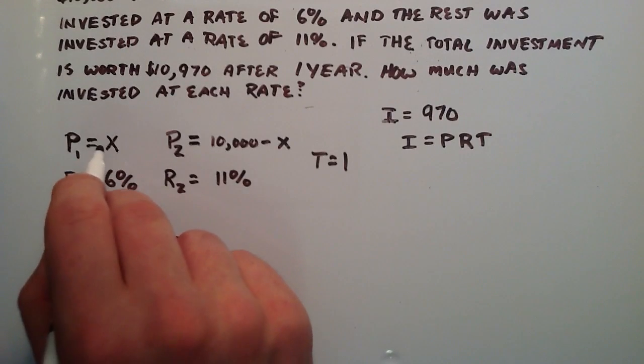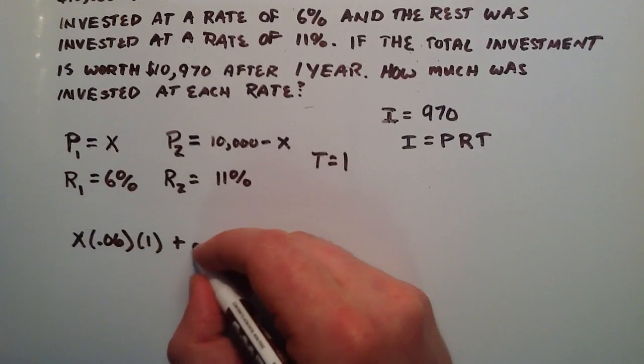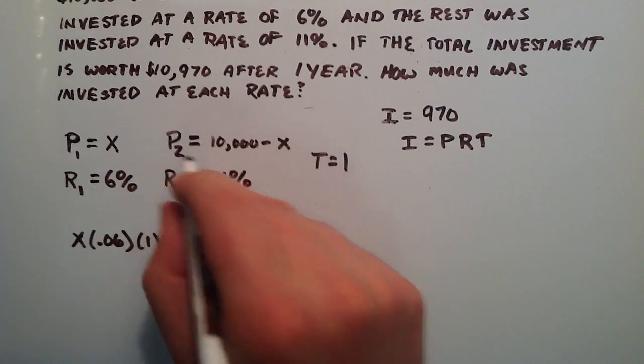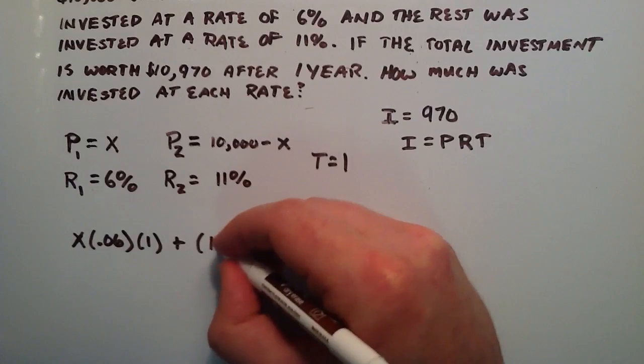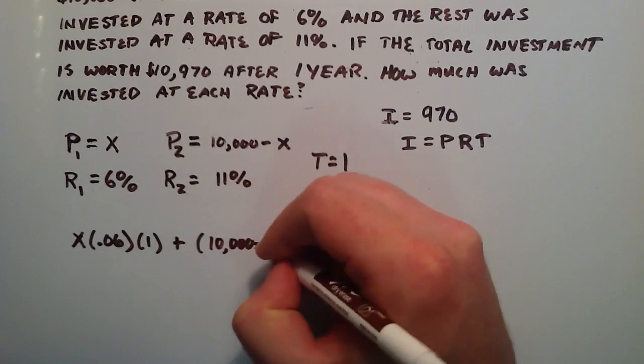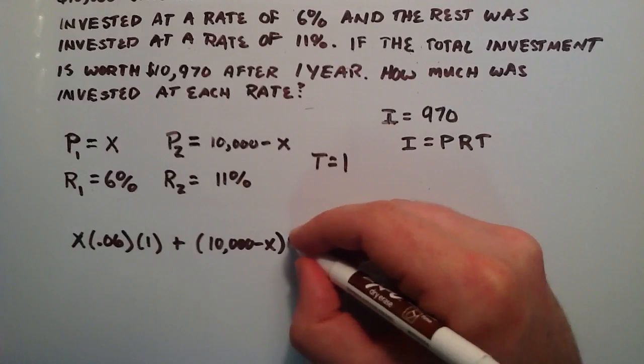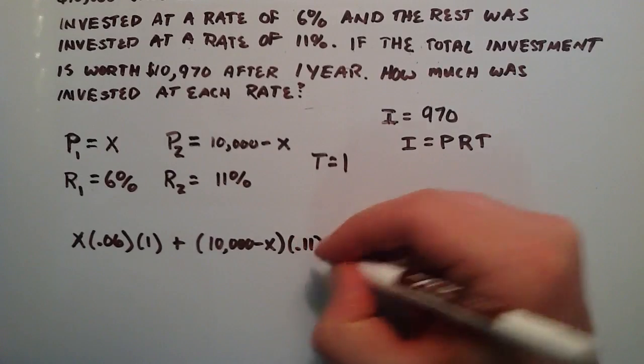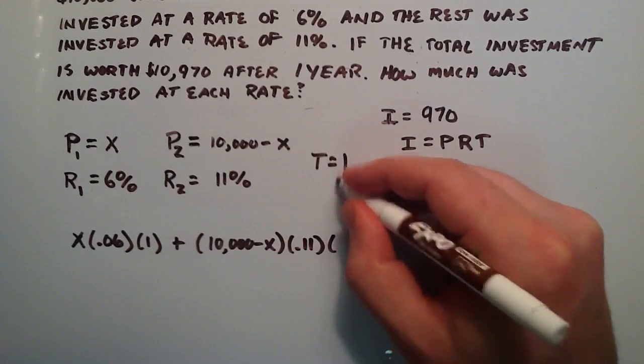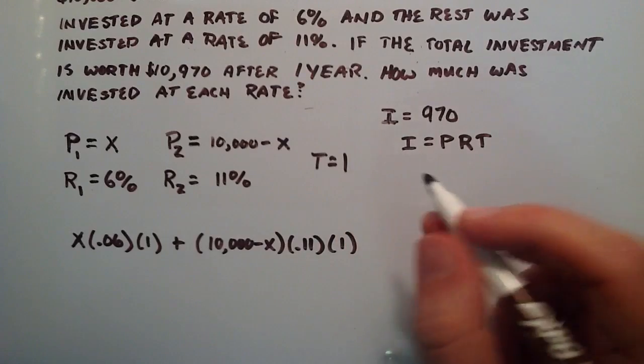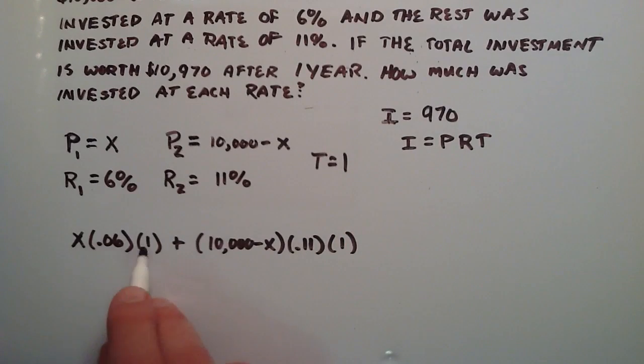And then we're going to add that to P₂, which is 10,000 minus X multiplied by R₂, which was 11 or .11 multiplied by the time invested, which was one year. So here we have P times R times T, which is the interest that we made off of the first investment,